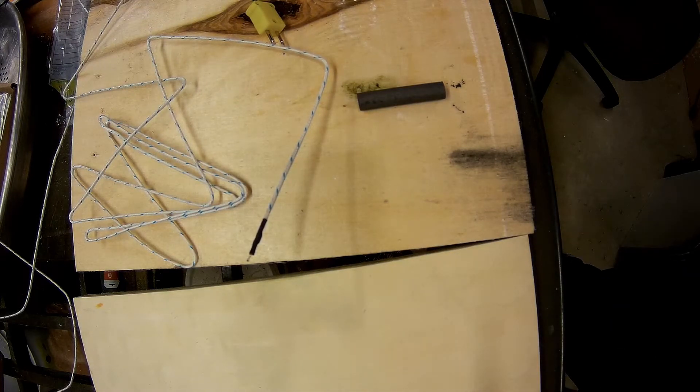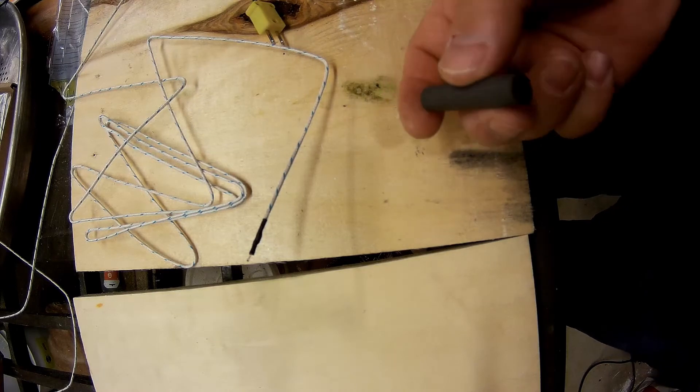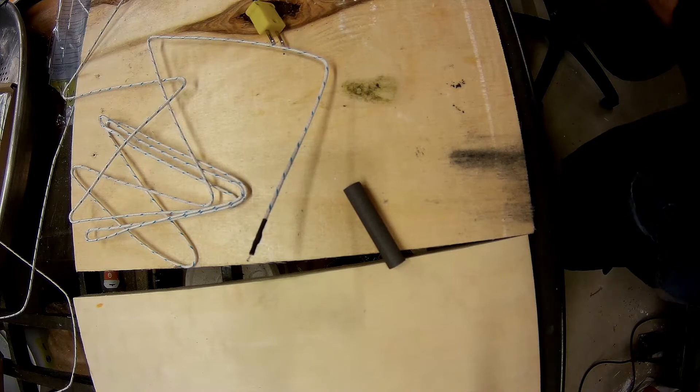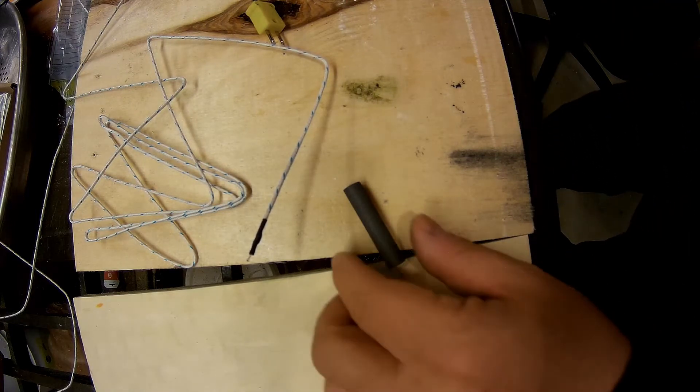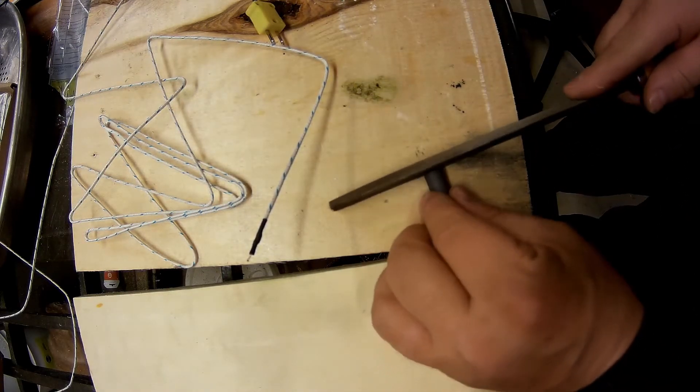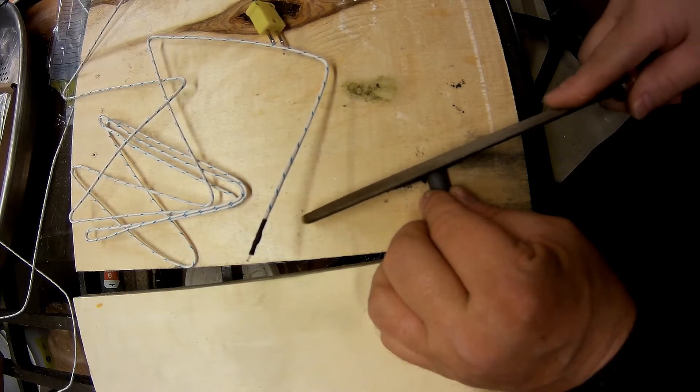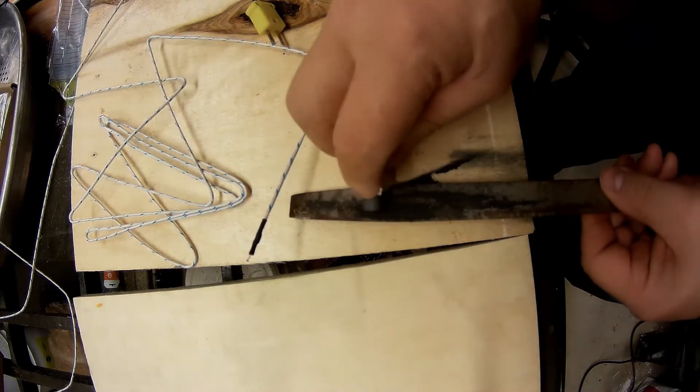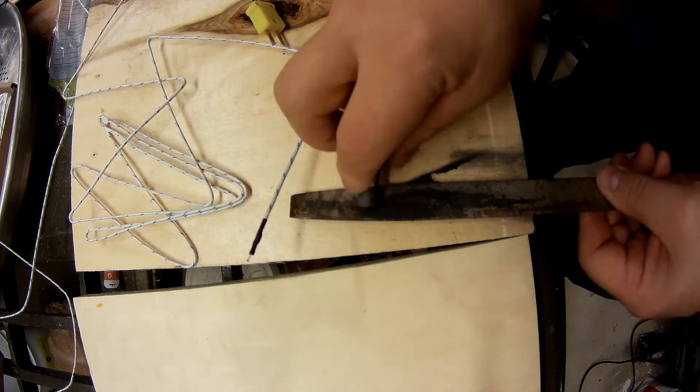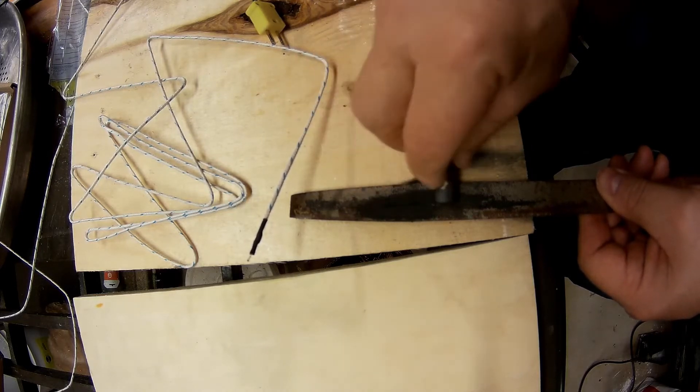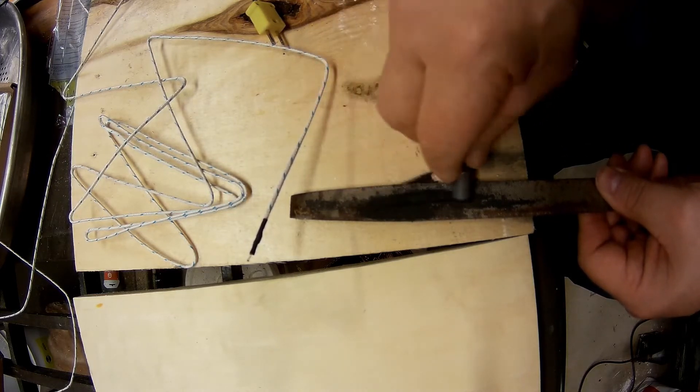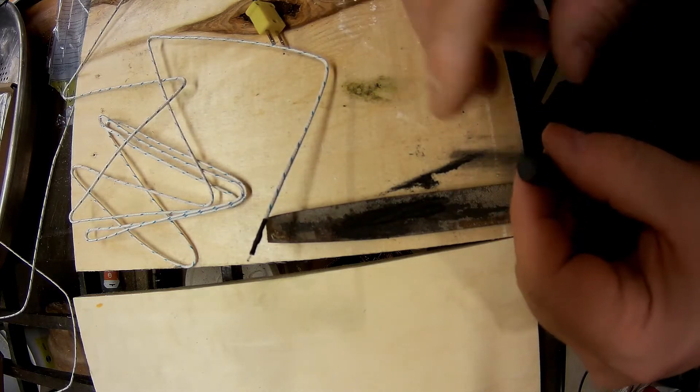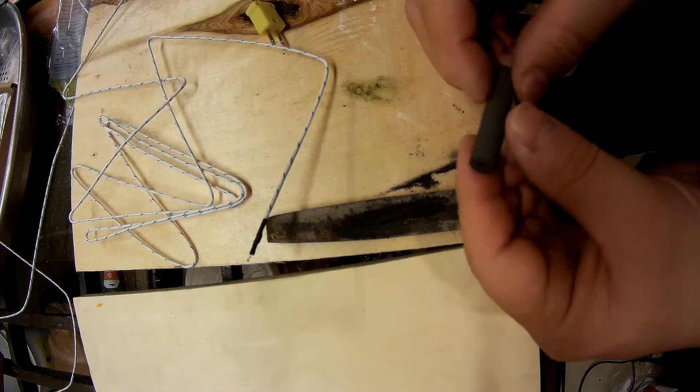That's good enough for now. So we've got that, and I'm going to take a file and just file this side down a little bit to make it so it has edges that are a little less sharp. All right, so we've got the closed end here and we've got the hole side here.